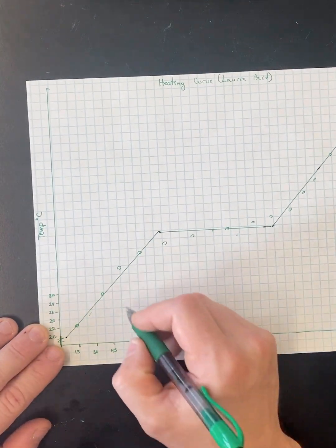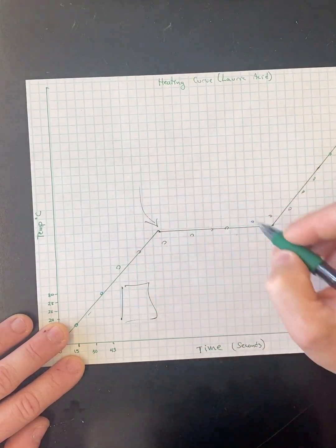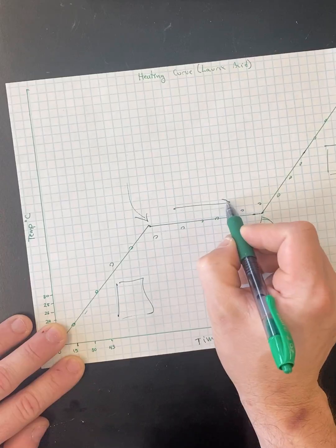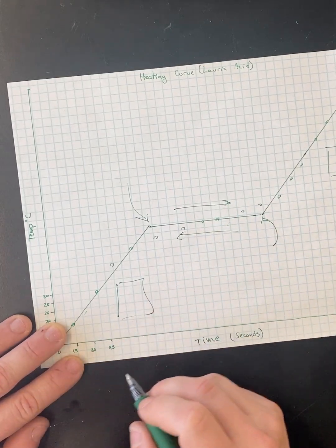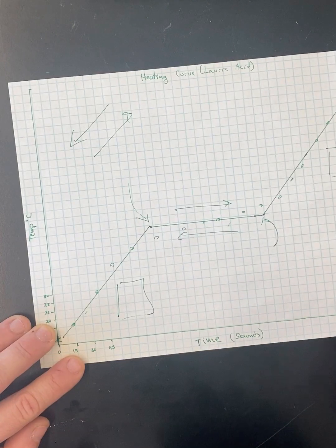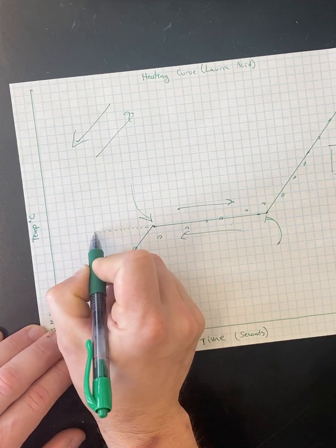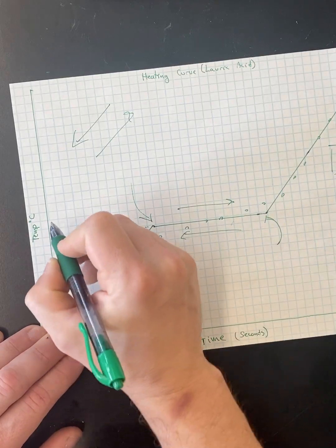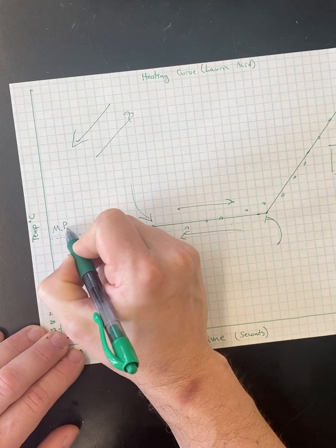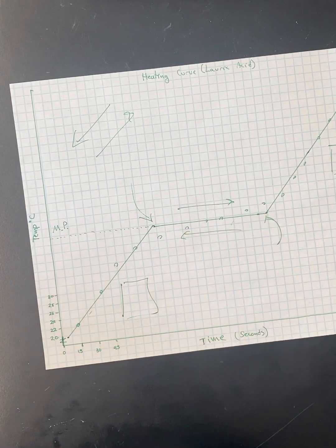And then what you're going to do is you're going to label everything. The phase here, the phase here, that part, that part, that direction, that direction. The endo-exo. And the most important part is, since this is the heating curve, we'll call this the melting point. And when we do the cooling curve, we'll call it the freezing point.